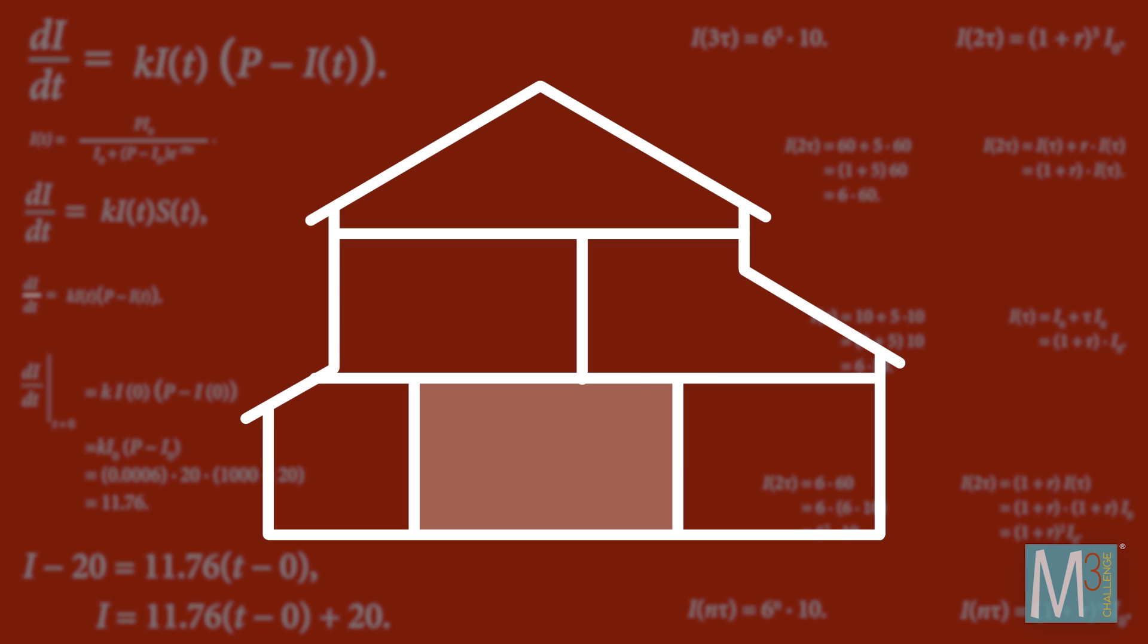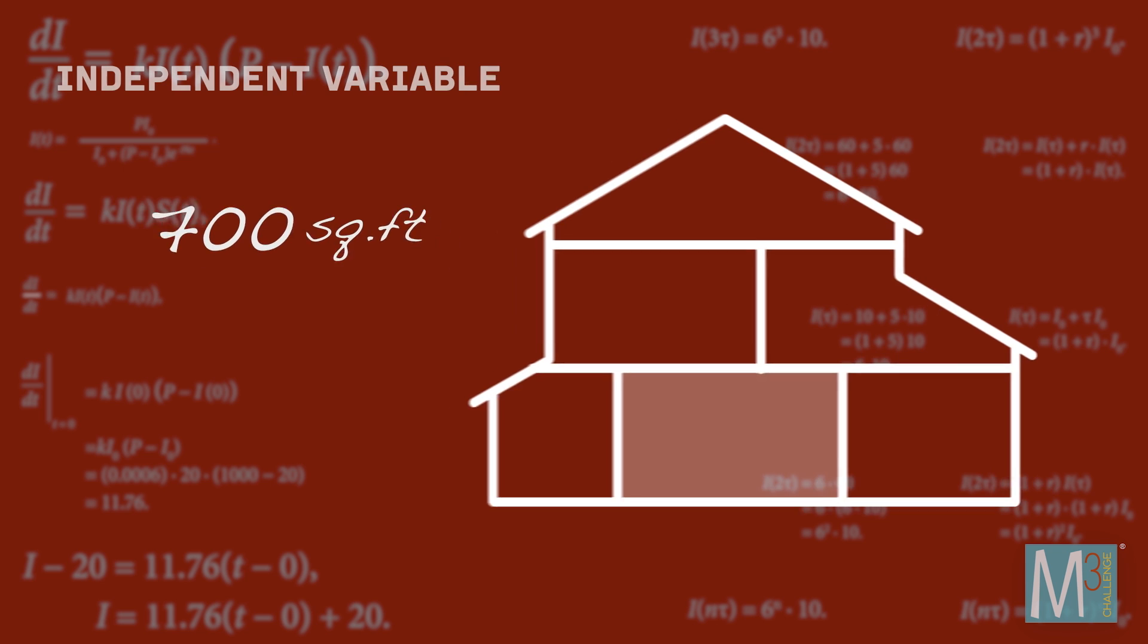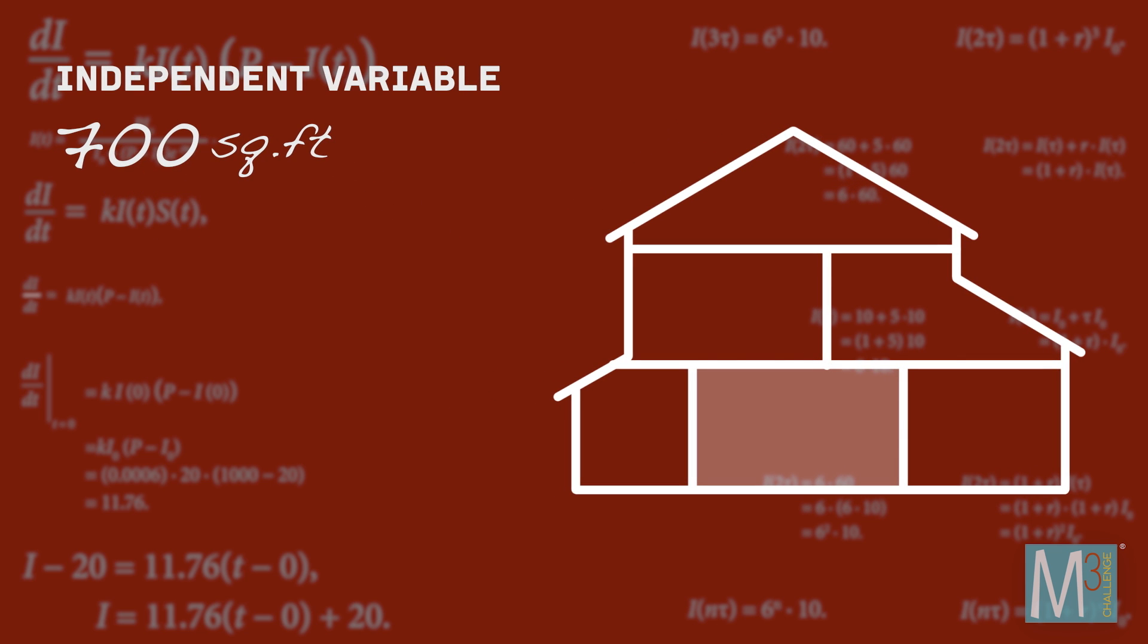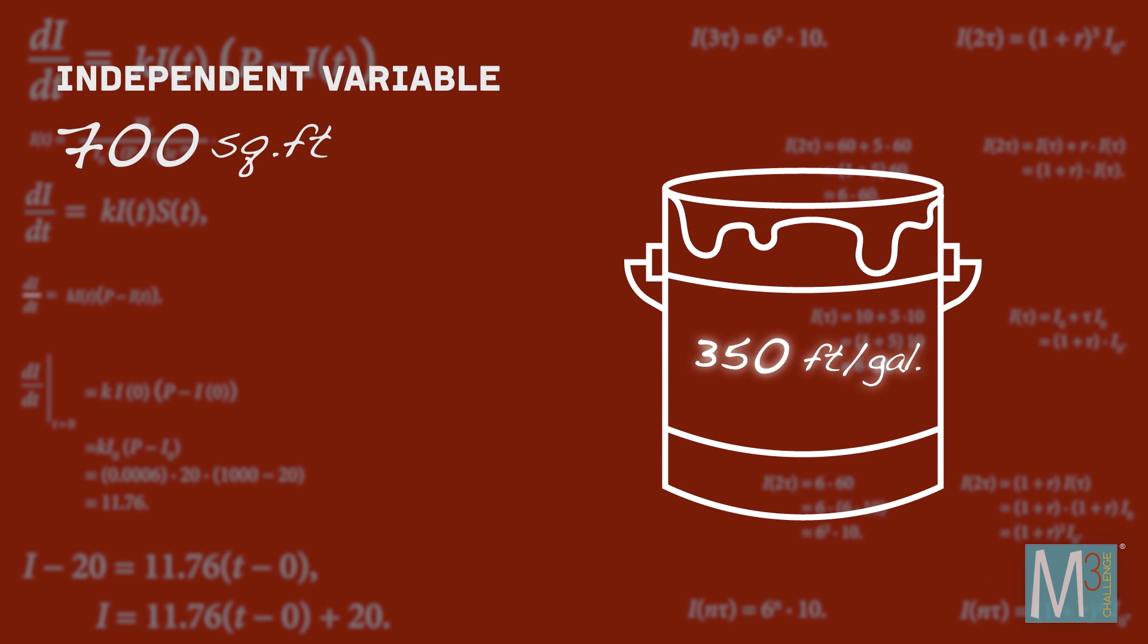You can take measurements to calculate the size of each room. Those are your independent variables or inputs. You also know how many square feet a particular brand of paint will cover. That's a fixed parameter.